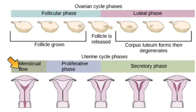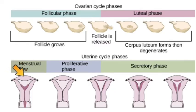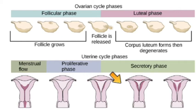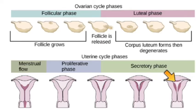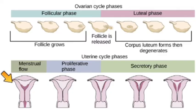The second part of the diagram shows what's happening in the uterus. During menstruation we have the menstrual flow where the endometrium exits through the vaginal canal over a few days. Then we have the proliferative phase and the secretory phase, where the endometrium grows and develops, getting ready for a possible implantation. If fertilization does not occur the endometrium will shed again and we're back at the beginning.